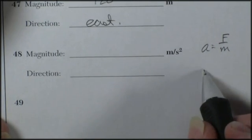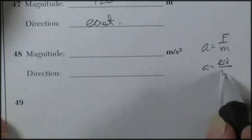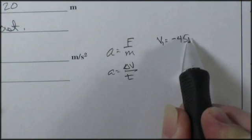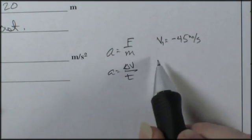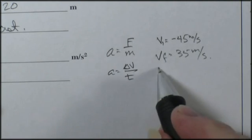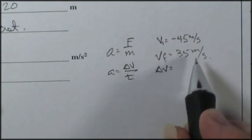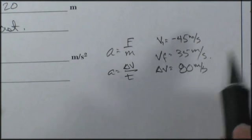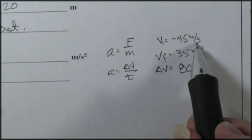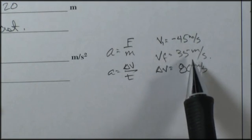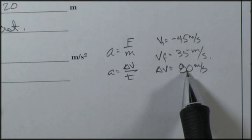Velocity initial was negative 45 meters per second. Velocity final was 35 meters per second. My change in velocity is going to be, ready for this, 80 meters per second. I'm going to go 45 down to zero plus an additional 35, so that's 80.